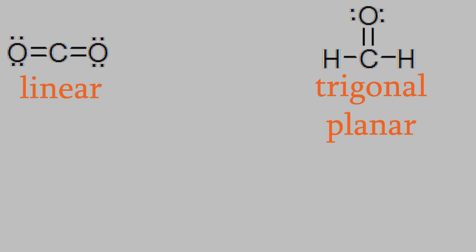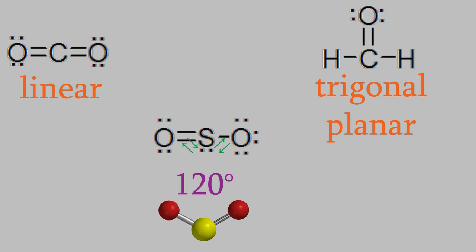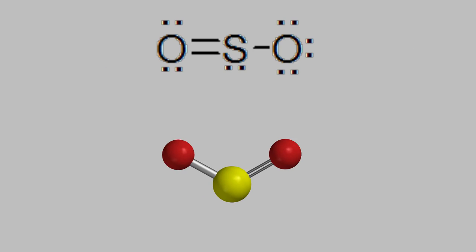For example, suppose we had the molecule sulfur dioxide. Its Lewis structure looks like this. As you can see, the sulfur has two bonds, like the carbon in carbon dioxide. But unlike the carbon, sulfur has an unshared electron pair. The unshared electrons take up space, so this won't be a linear molecule like CO2. Instead, the unshared pair will push away the electrons in the bonds, so that the bonds are at a 120 degree angle, just like in the formaldehyde molecule. However, this isn't a trigonal planar molecule, because the electron pair isn't visible when we look at the atoms. We only see the two bonds, and we refer to this shape as bent.